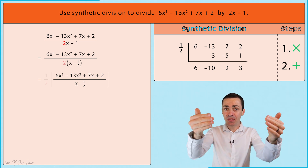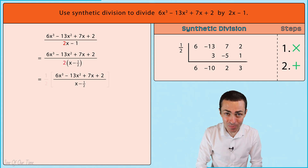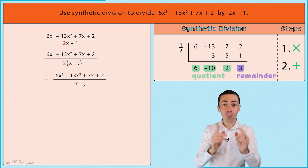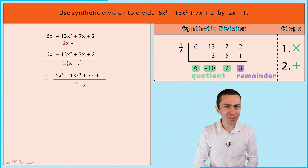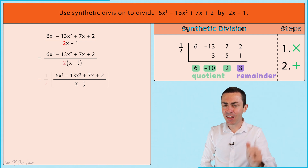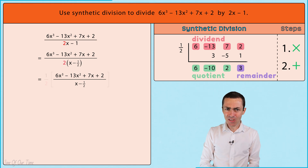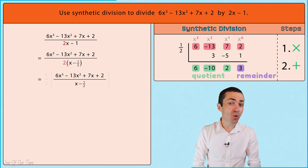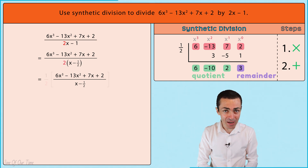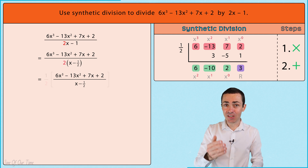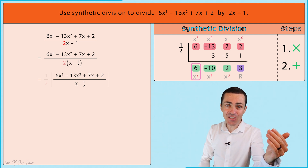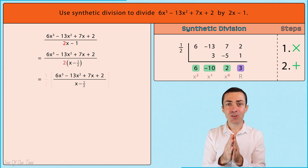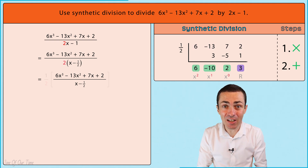The numbers at the bottom of the synthetic division symbol represent the coefficients of the quotient and the remainder. The highest power of the quotient is always one less than the highest power of the dividend. Since the highest power of the dividend is x³, the quotient's highest power will be x², giving us the quotient 6x² minus 10x plus 2, with a remainder of 3.